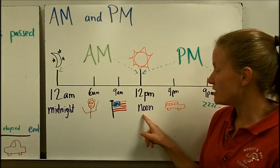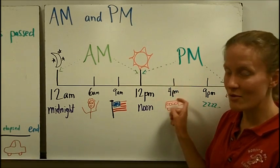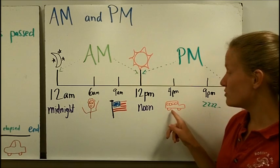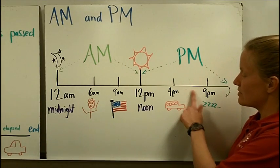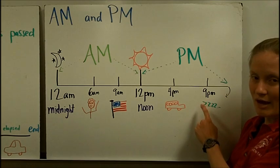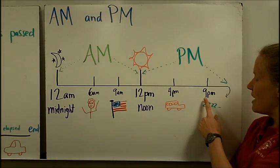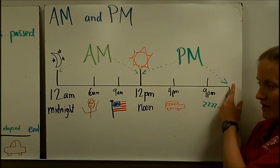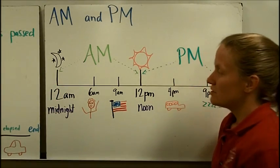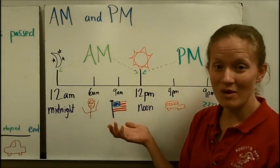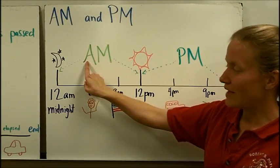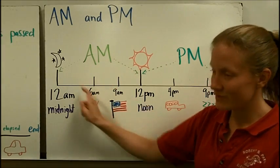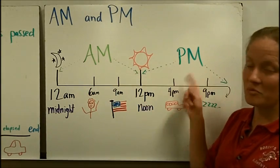12 p.m. is noon, right after we finish lunch. The afternoon would be 3 or 4 p.m. — about when you are going home from school. Then you eat dinner, and go to bed around 8, 9, or 10 p.m. Once it gets to 11:59 p.m., the next minute is 12 a.m. and the next day begins. One way to remember it: in the alphabet, A comes before P, so the a.m. part of the day comes before the p.m. part of the day.